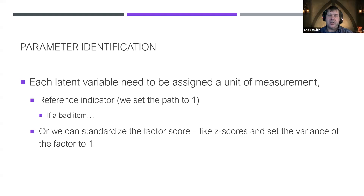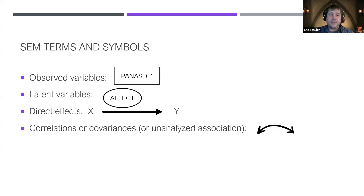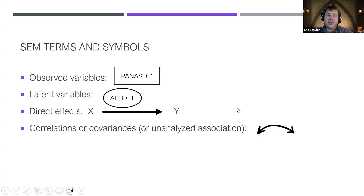When measuring depression or happiness, we have to assign the latent variable a unit of measurement because right now it doesn't have one. We can either set a reference indicator — fixing that path from the latent to the indicator to one — or we can standardize the factor, like z-scores, and set the variance to one. If you set a bad item as your reference indicator, it's going to create issues. So you want the reference to be a good reflector of the latent. In diagrams: a square box is an observed item, an oval is a latent variable. Direct effects are single-headed arrows; double-headed arrows represent covariances or correlations.